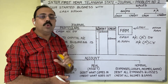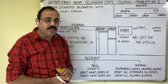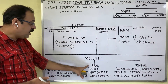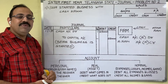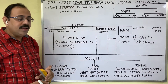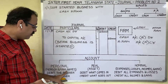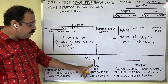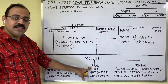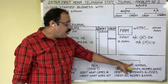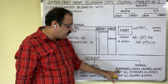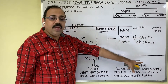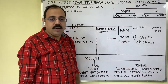The second step is grouping. Grouping means accounts are divided into 3 types: personal account, real account, and nominal account. If any account is opened with a personal name or firm name, it is a personal account. If an account is opened with an asset name, it is a real account. If an account is opened with an expenditure name, loss name, income name, or gain name, it is a nominal account.